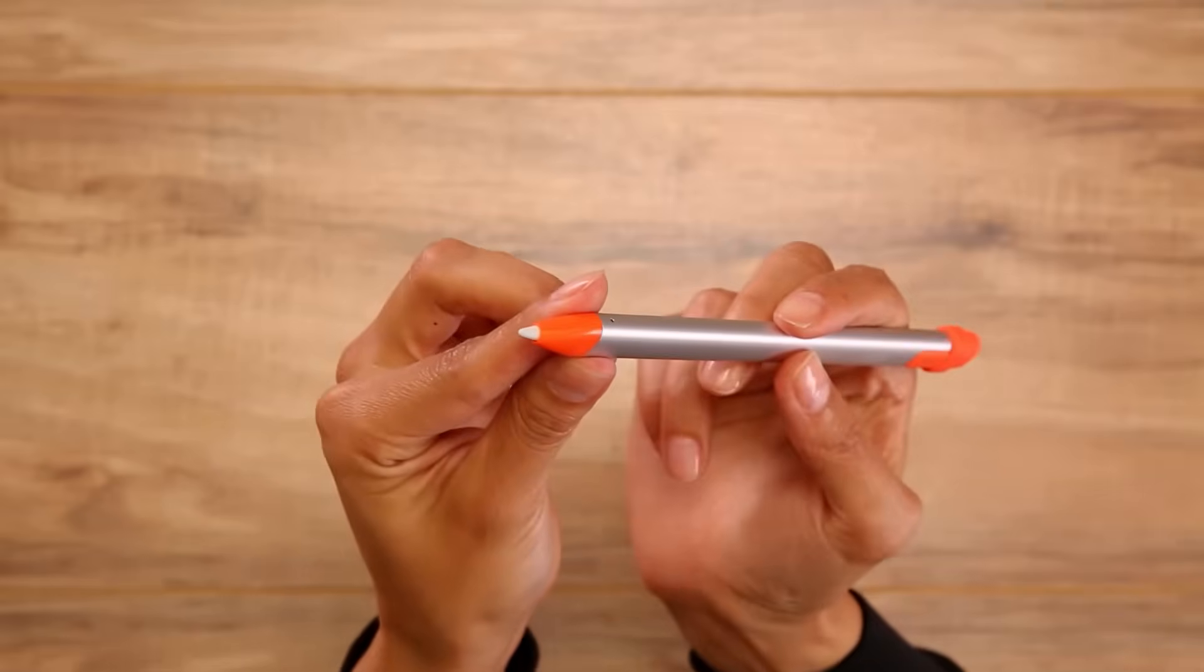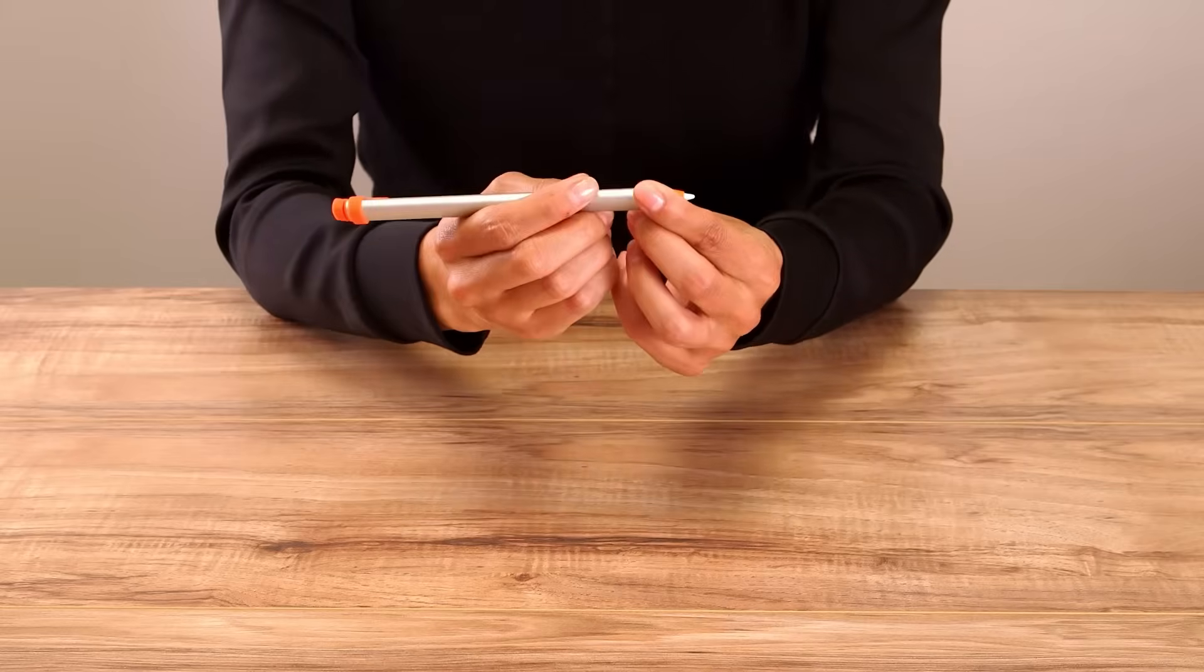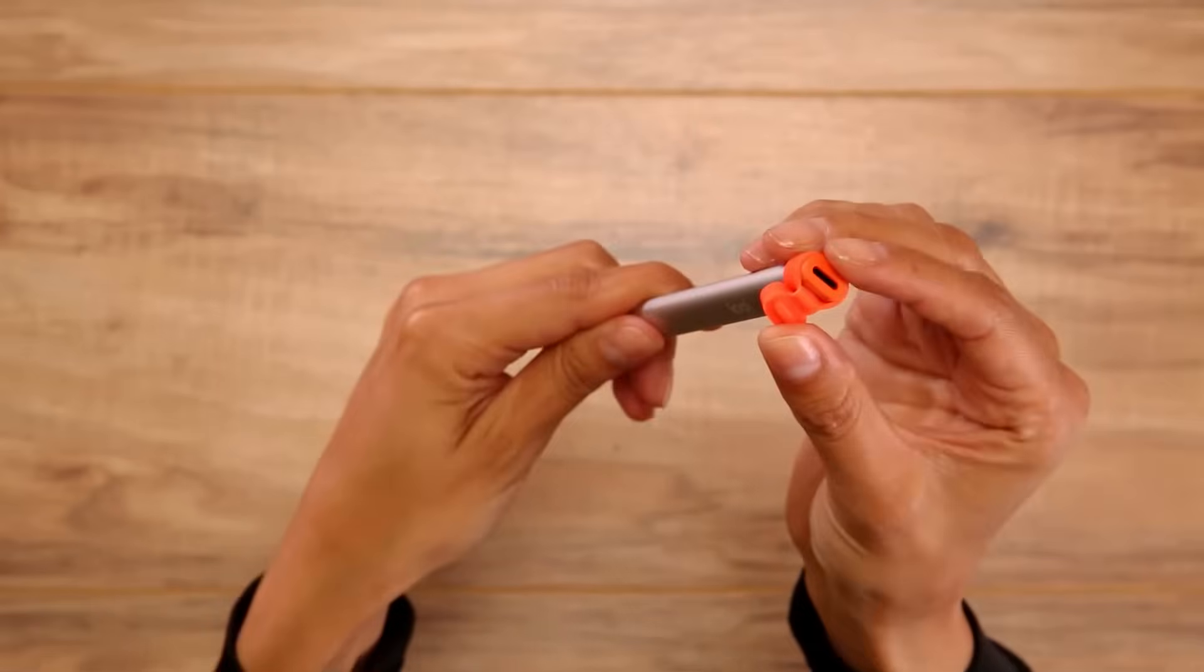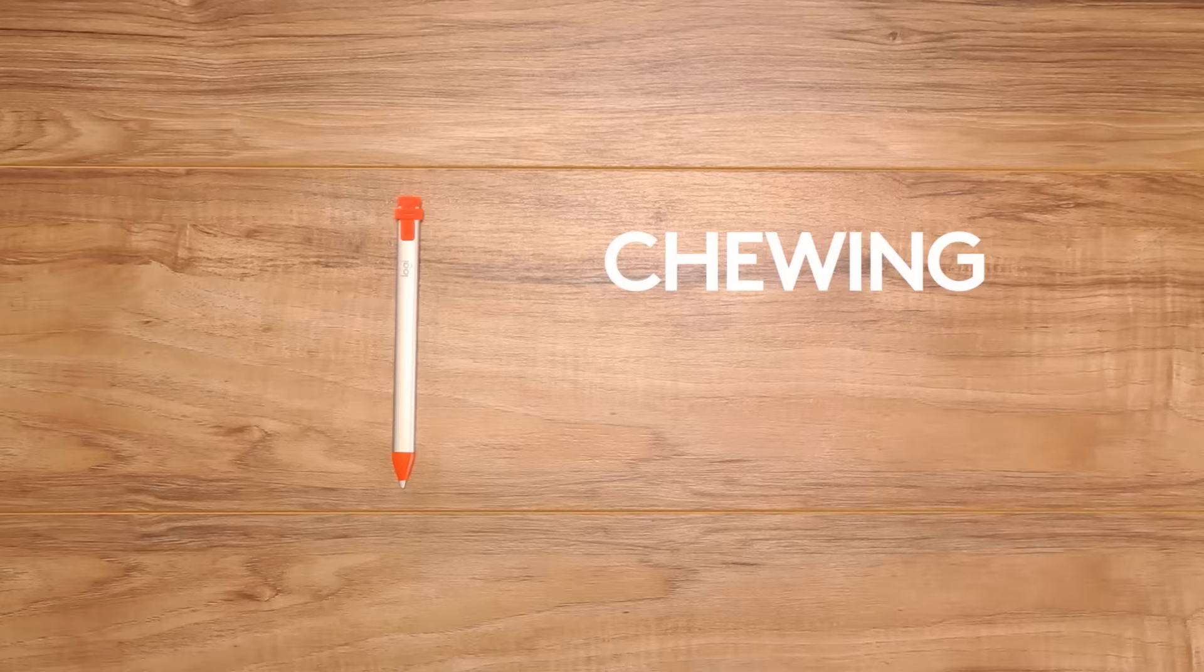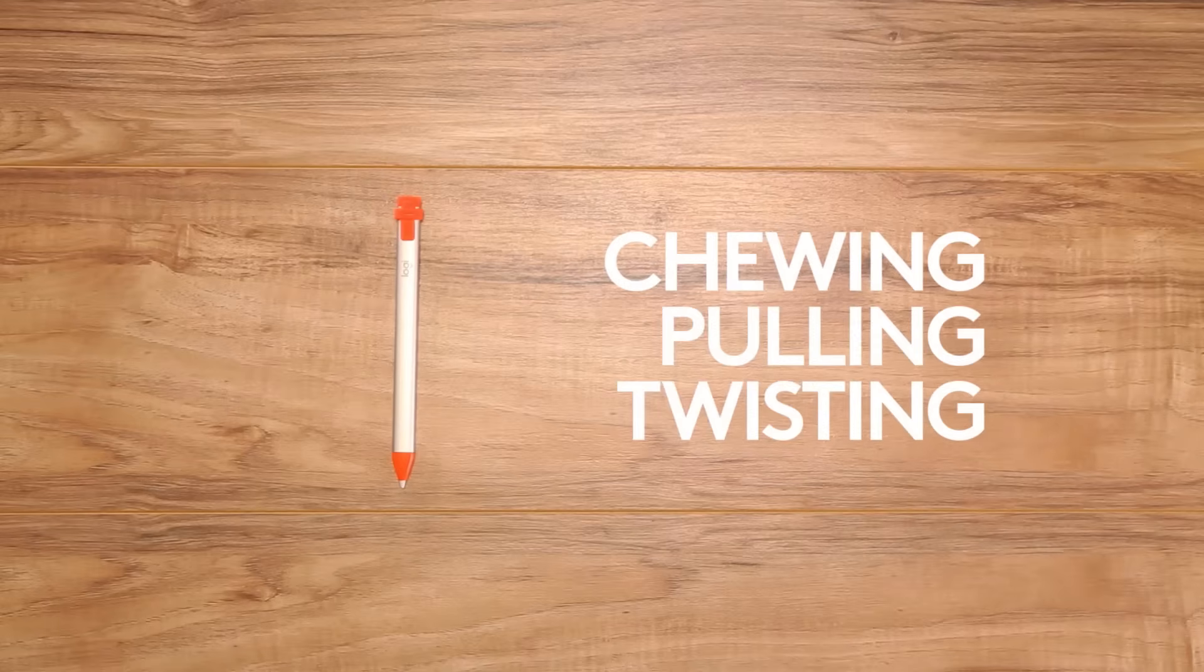If the tip wears off or is damaged, it can be replaced. The cap covering the charging port is tethered so it won't get lost. The cap is not designed to withstand chewing, pulling, or twisting and will need to be replaced if these occur.